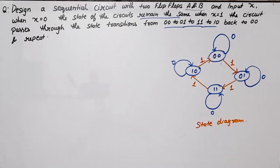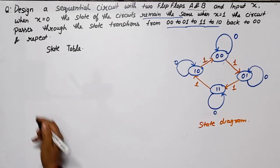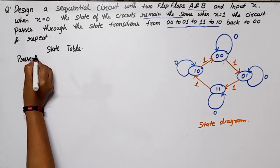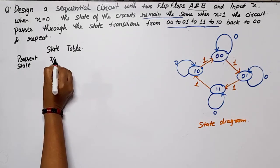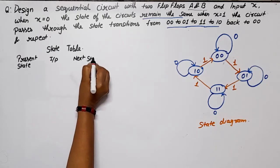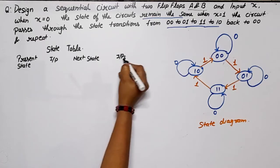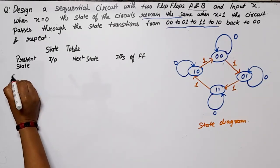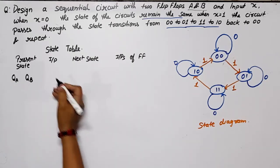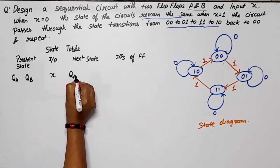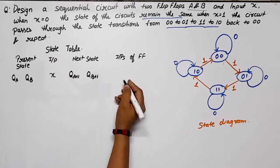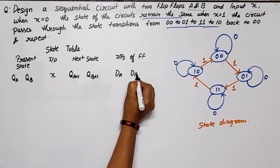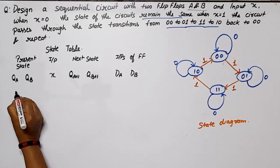Now we will draw the state table. The state table will have: present state, then input, then next state, then inputs of the flip-flop. Since the question does not specify which flip-flop to use, I will pick the easiest — the D flip-flop. You can choose D, T, JK, or SR. The present state columns are QA and QB, the input is X, the next state columns are QA+1 and QB+1, and the flip-flop inputs are DA and DB.